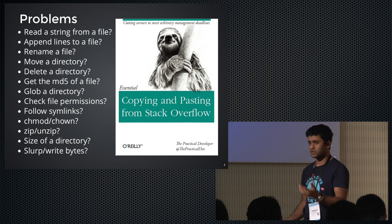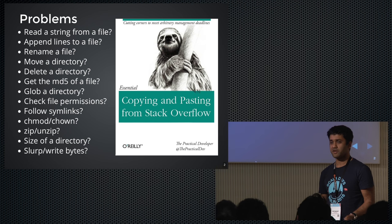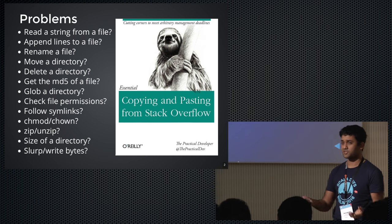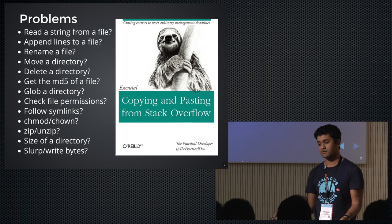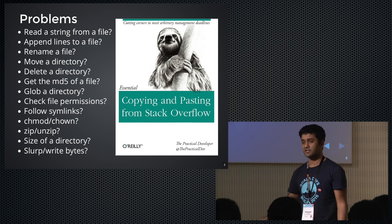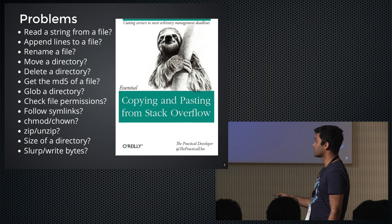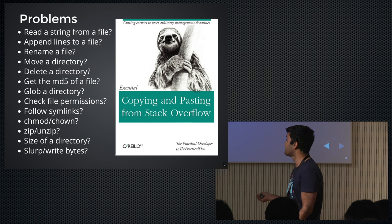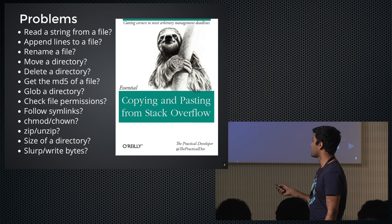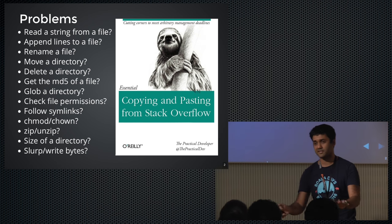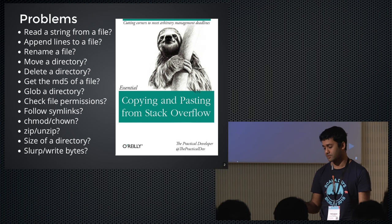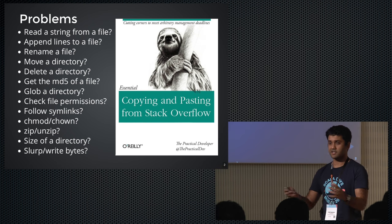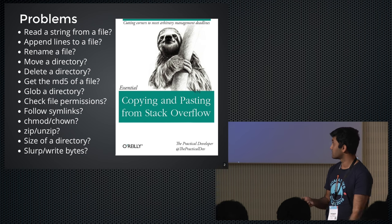When I talk about I/O in Scala, I specifically mean file system I/O — things like reading a string from a file, writing something to a directory, listing a directory, maybe some Unix utils like changing ownership, chmod, zip, unzip, MD5 of a directory, moving, renaming — all those kinds of file system operations. I'm not going to talk about network I/O or any other kind of I/O; basically just file system operations in this talk.